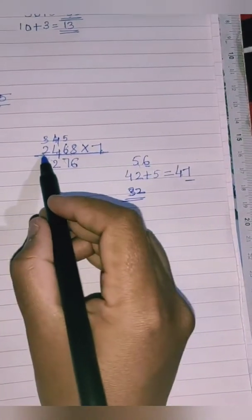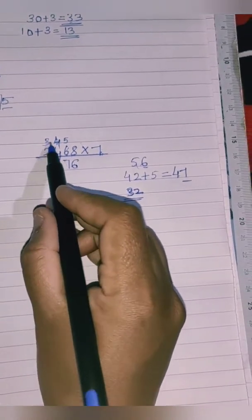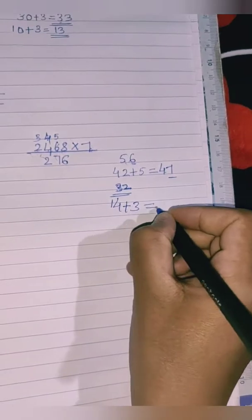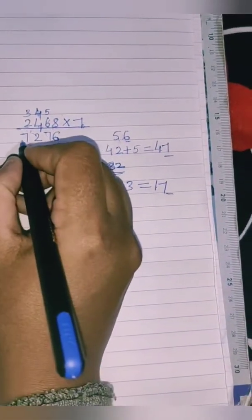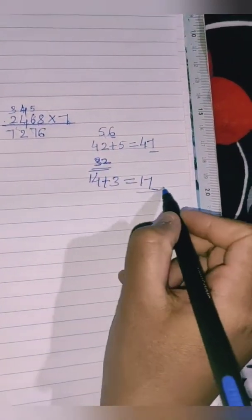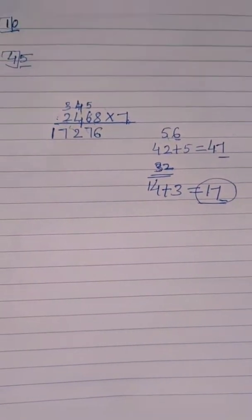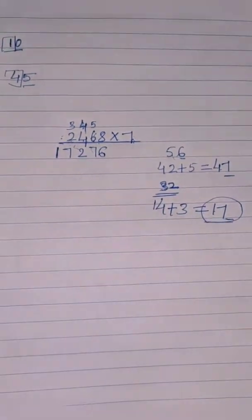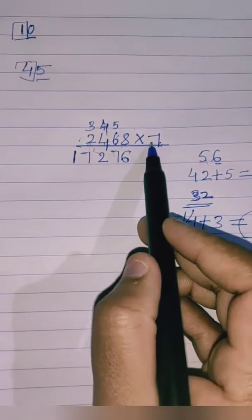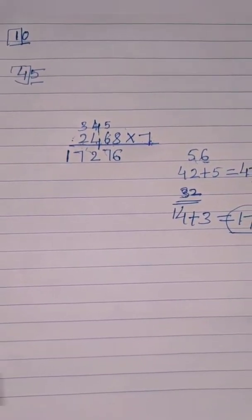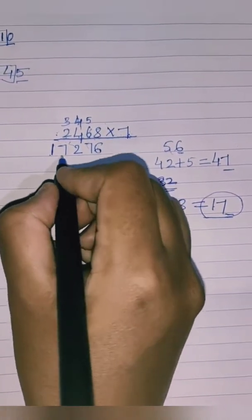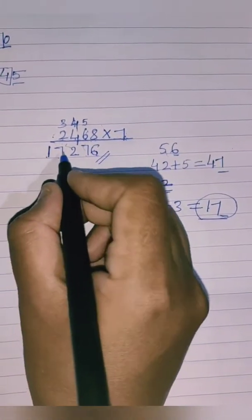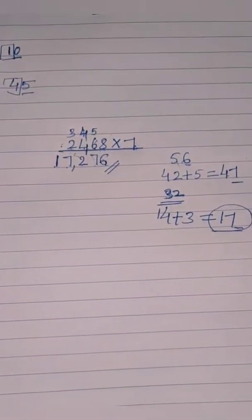Next: seven twos are 14, plus carry 3 is 17. Write 7 here and carry 1. Since there are no more digits, we write this 1 directly. Since we are multiplying by only one digit, there is no addition step needed. So the product of 2468 and 7 is 17,276.